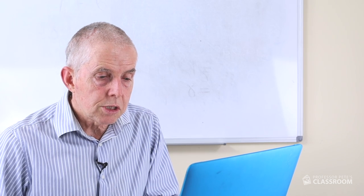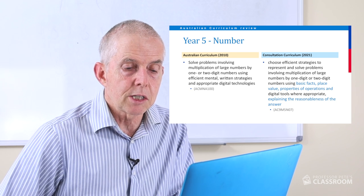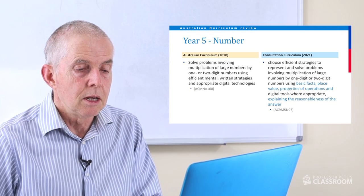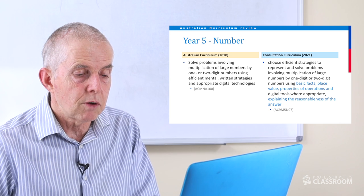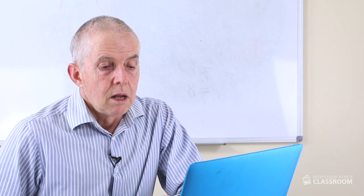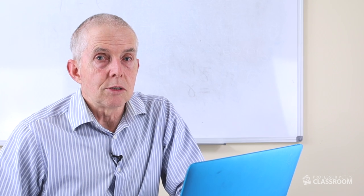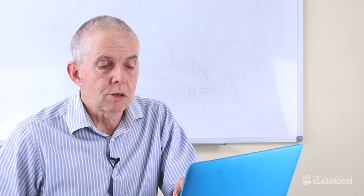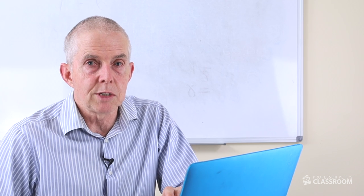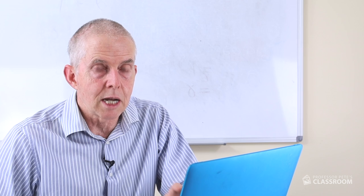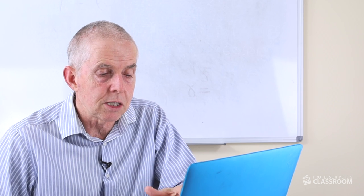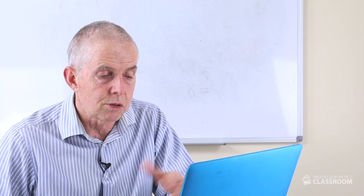Number seven: choose efficient strategies to represent and solve problems involving multiplication of large numbers by one-digit or two-digit numbers — that's all the same text — then we have some additional information: basic facts, place value, properties of operations and digital tools where appropriate, explaining the reasonableness of the answer. I really do commend the curriculum writers for the way they've expanded on these content descriptors. They're just wonderful — a lot more language, a lot more verbs, a lot more opportunities for teachers to build valuable teaching activities. Well done, curriculum writers.